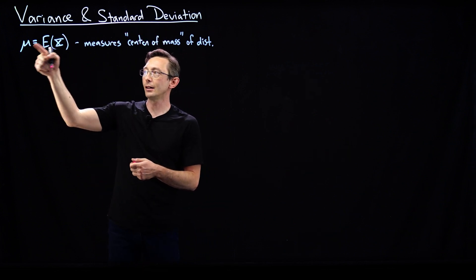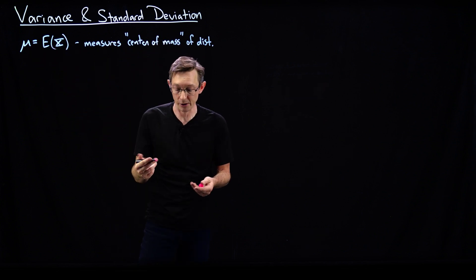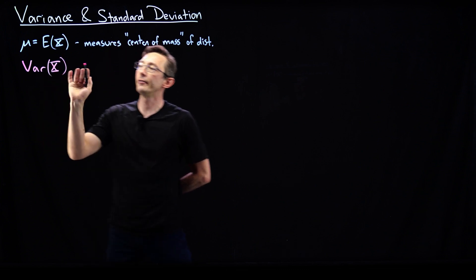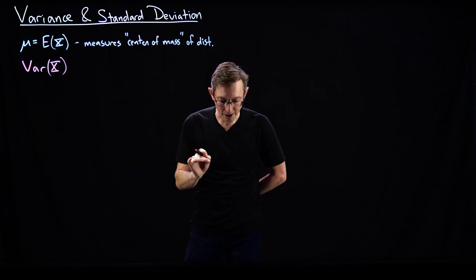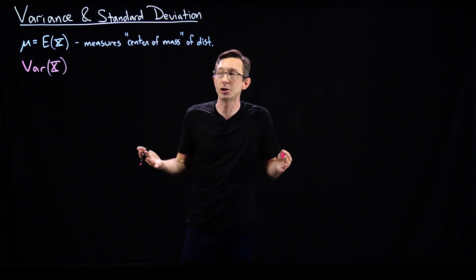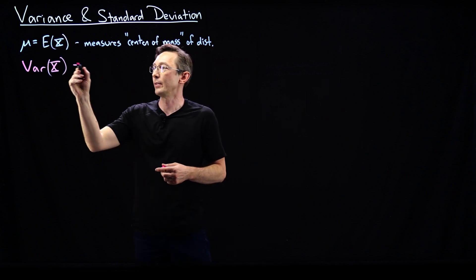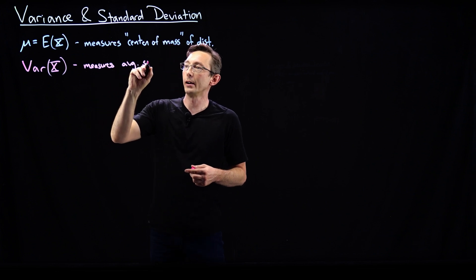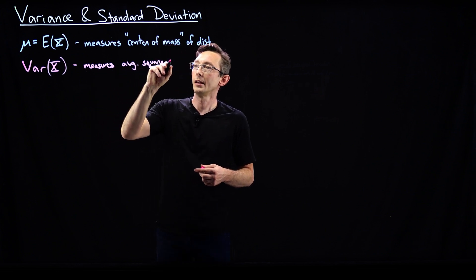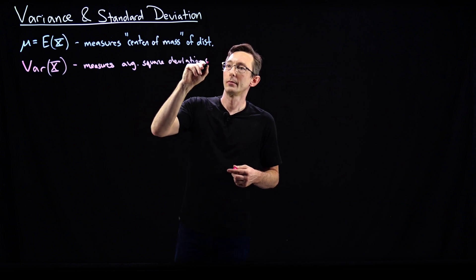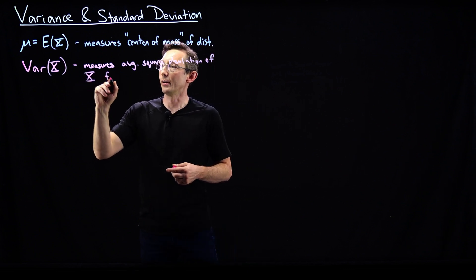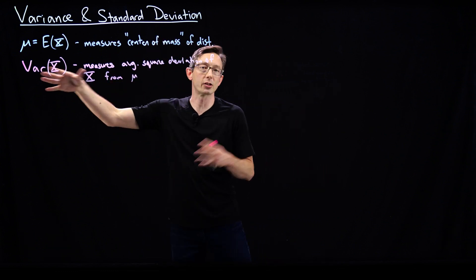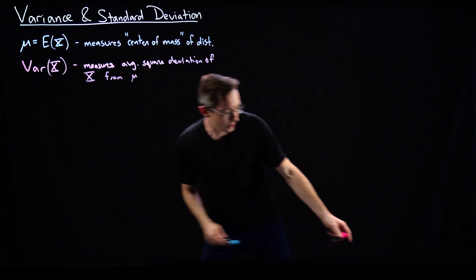So if the mean mu is the measure of center of mass of the distribution, then the variance of x measures the average squared deviation of x from that mean value mu. And the standard deviation is just the square root of the variance.